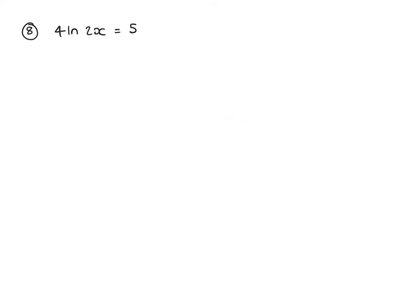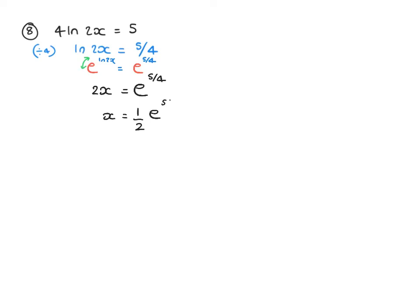Question 8: 4 ln 2x equals 5. Divide by 4: ln of 2x equals 5 over 4. People often try to split up the 2x unnecessarily — there's no need. It's in the format ln of something equals 5 over 4, so 2x equals e to the power of 5 over 4. Therefore x equals one half e to the 5 over 4.